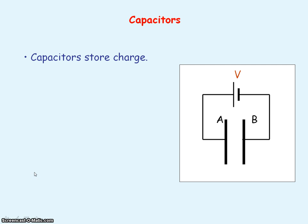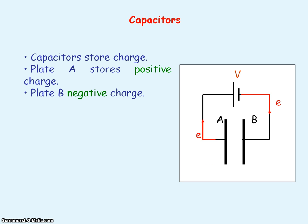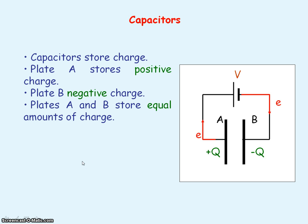Capacitors store charge. If we look at the negative terminal of our battery, electrons will move from this terminal and be deposited onto plate B. Electrons will then leave plate A so that it moves towards the positive terminal of the battery. With electrons leaving plate A, plate A will store positive charge and plate B will store negative charge, and the plates will store an equal amount of charge.